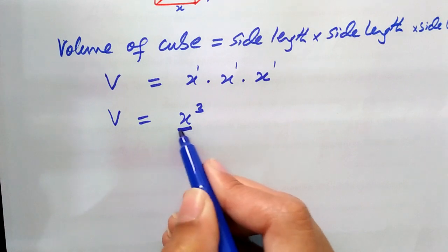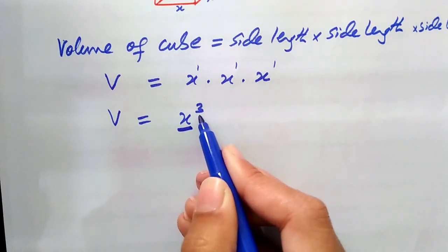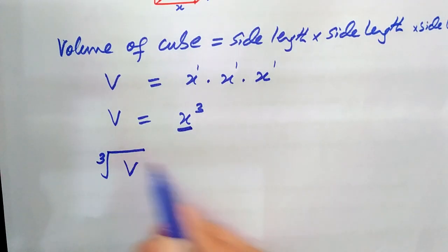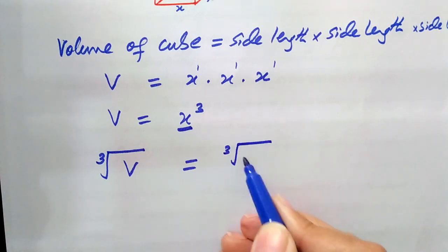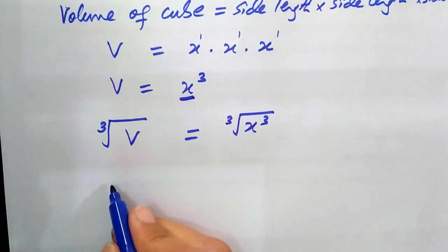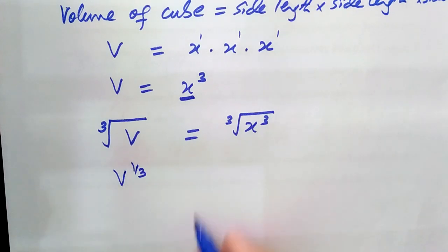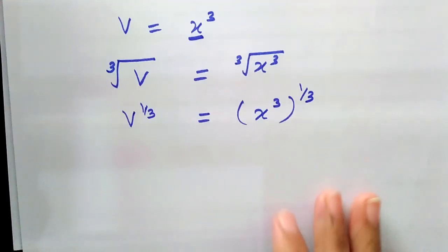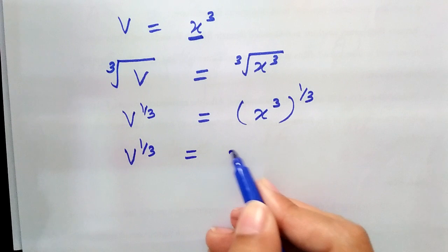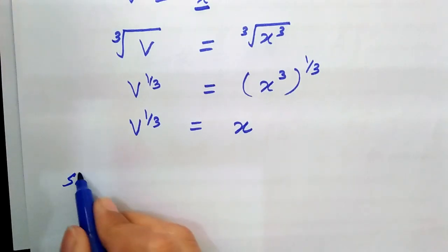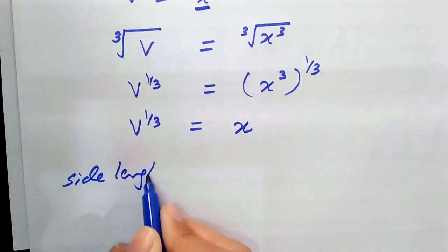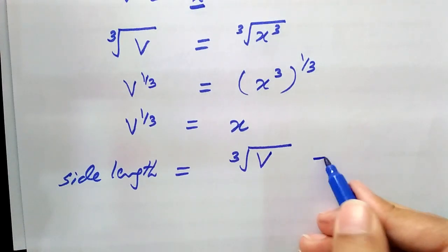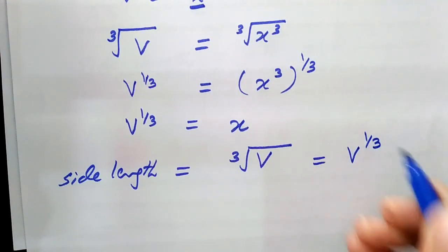To find x, we remove the exponent 3 by taking the cube root on both sides. The cube root in rational form is exponent 1 over 3, so V raised to power 1/3 equals x. Therefore, the side length of a cube equals the cube root of volume, which equals volume raised to power 1/3.